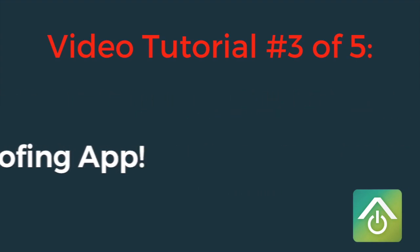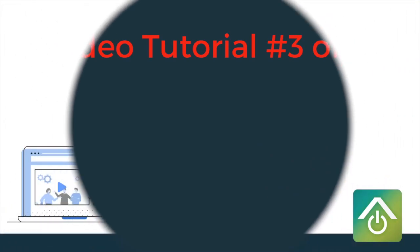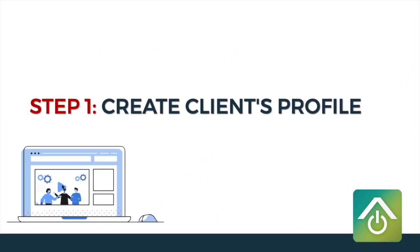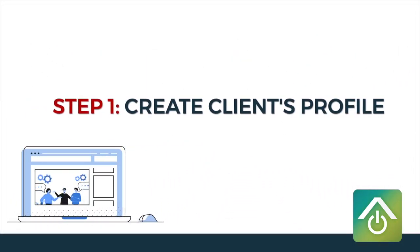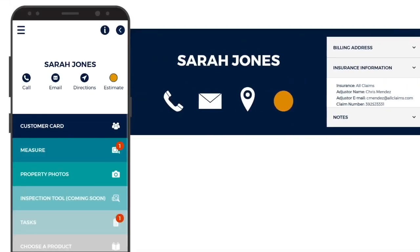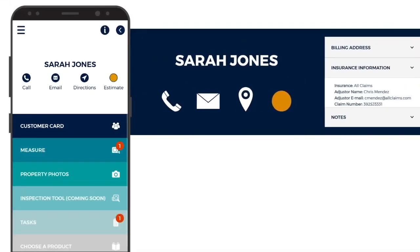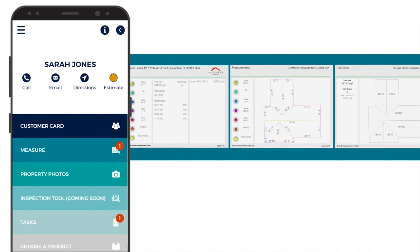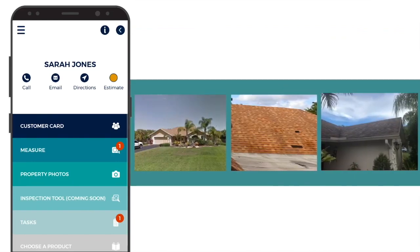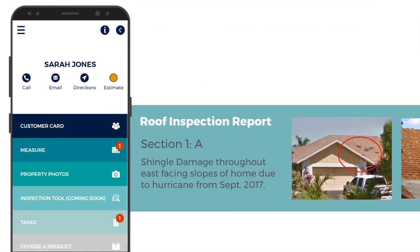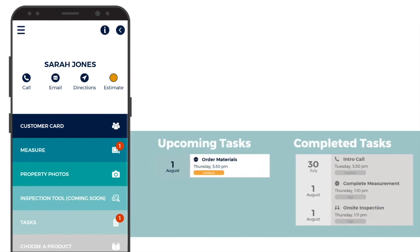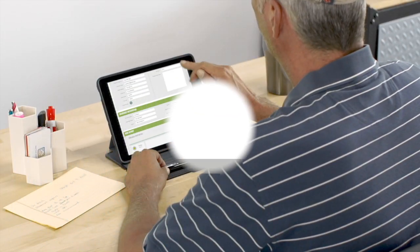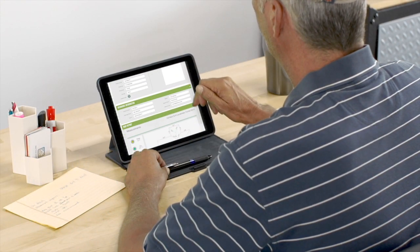All right, let's get started. Step one: create a new profile for your client in the iRoofing customer database. Save their name, address, and any details that you have. Any information you create for this customer — like a measurement, an estimate, or a simulation — can be saved and accessed from this profile, so you have it all in one place.